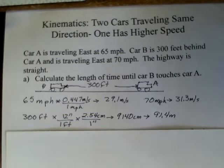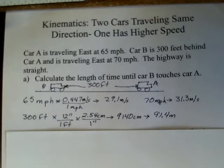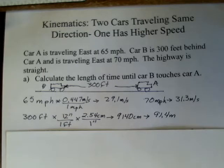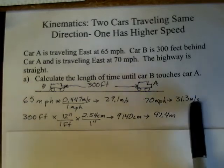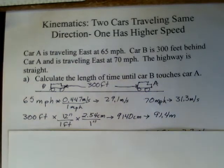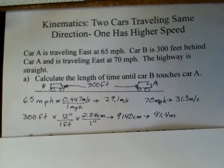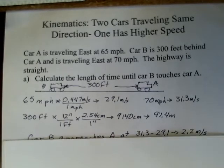The 300 feet also needs to be a metric number to solve this problem, so some more practice with conversions. 300 feet times 12 inches per foot gives us a number of inches, and then 2.54 centimeters per inch cancels off the inch units, leaving us with 9,140 centimeters. Putting that into meters, since we have our speed in meters per second, our distance is 91.4 meters.